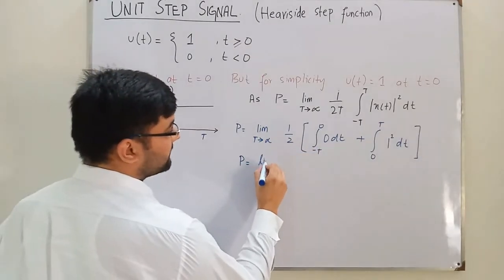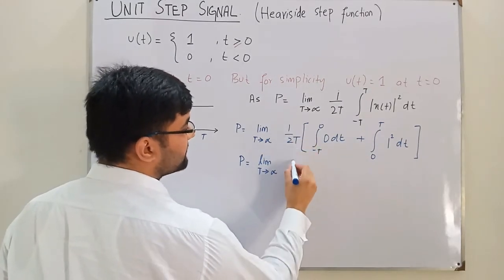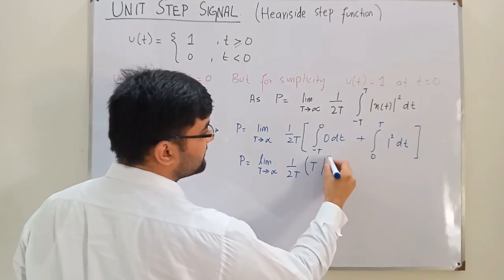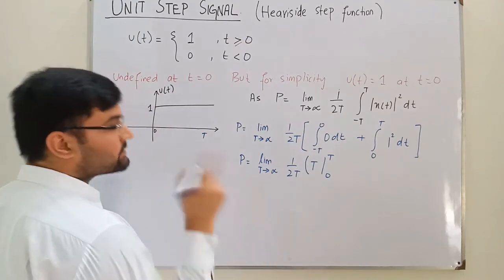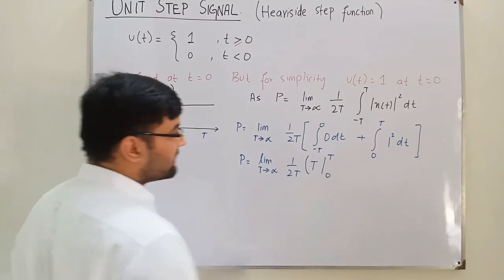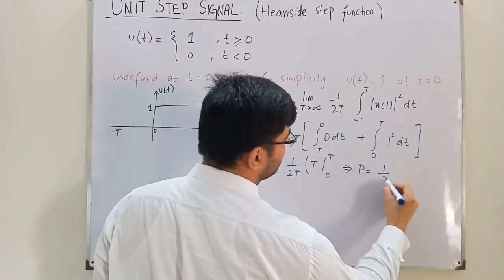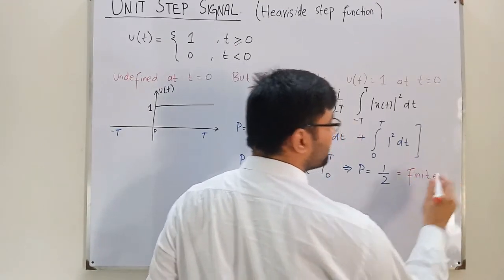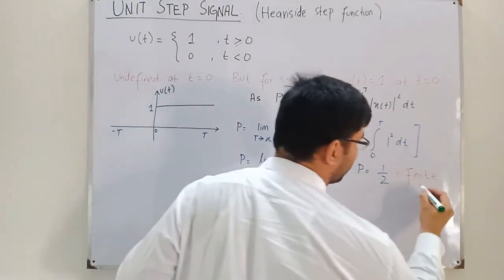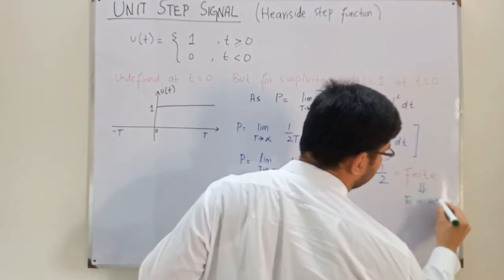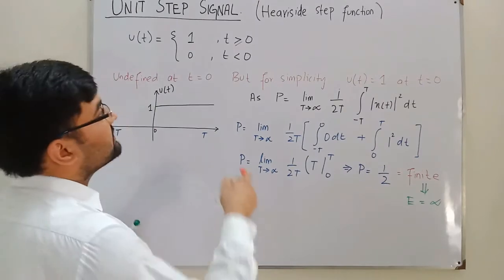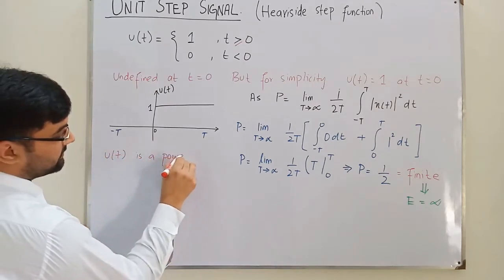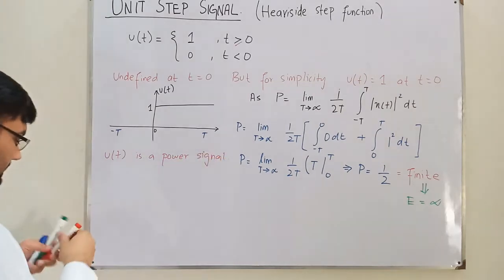So we have P = limit T→∞ of (1/2T) × T = 1/2. The power equals 1/2, which is a finite value. When the power of a signal is finite, this implies the energy of the signal is infinite. Since power is finite and energy is infinite, the unit step function u(t) is a power signal.